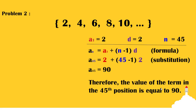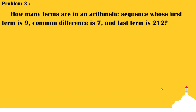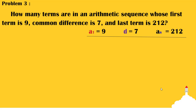Now, let's proceed to problem number 3. How many terms are in the arithmetic sequence whose first term is 9, common difference is 7, and the last term is 212? From the given, we have a sub 1 is equal to 9, d is equal to 7, and a sub n is equal to 212. The question is asking how many terms are in the arithmetic sequence, and we will find the answer by determining the position of the last term. We use the formula for the arithmetic sequence and solve for n.